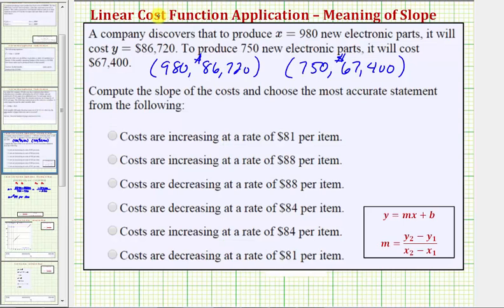The only two options that have $84 in them are these two here. And because the slope is positive 84, the most accurate statement is that costs are increasing at a rate of $84 per item. I hope you found this helpful.